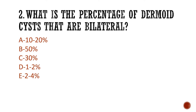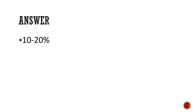Question 2: What is the percentage of dermoid cysts that are bilateral? Is it A) 10–20%, B) 50%, C) 30%, D) 1–2%, or E) 2–4%? The answer is 10–20%.